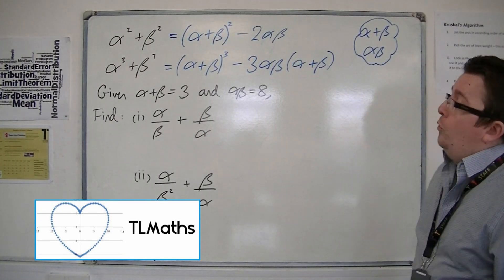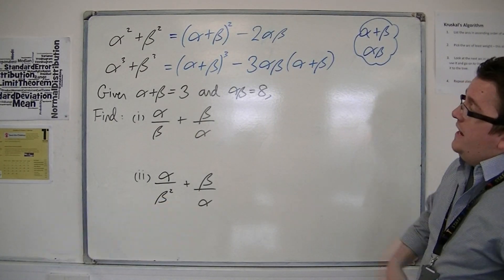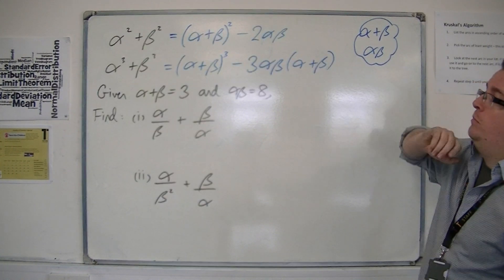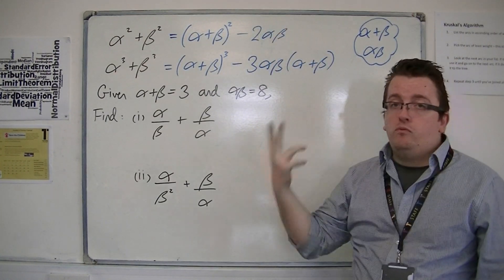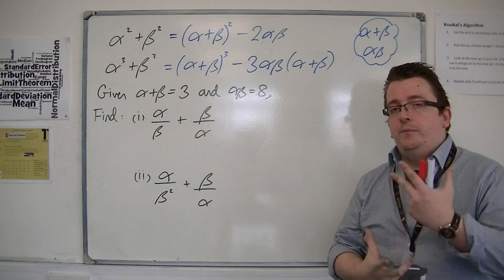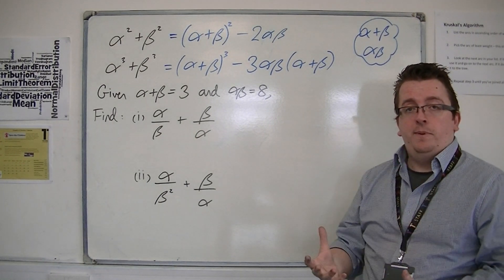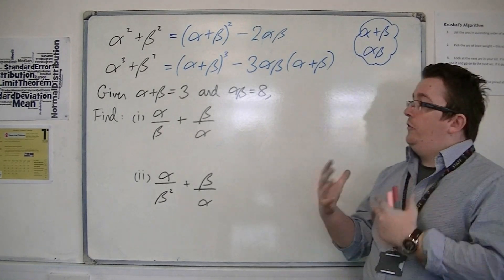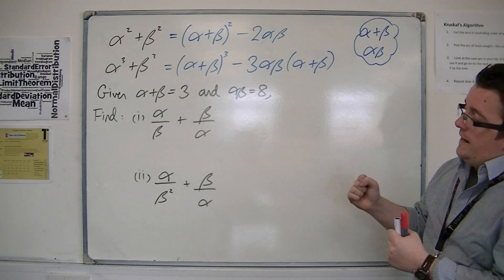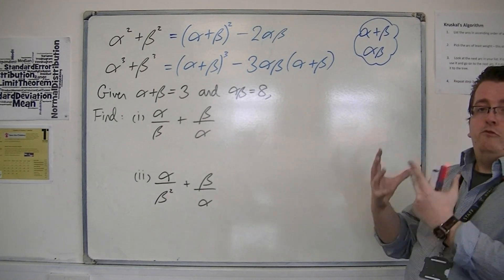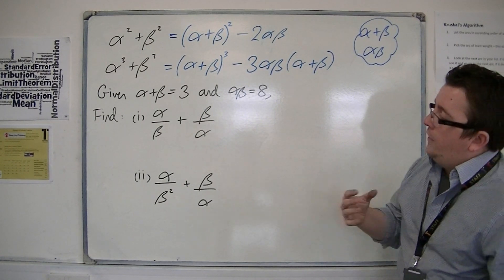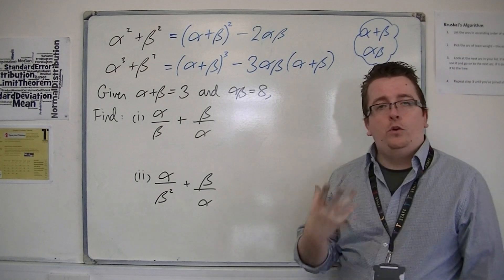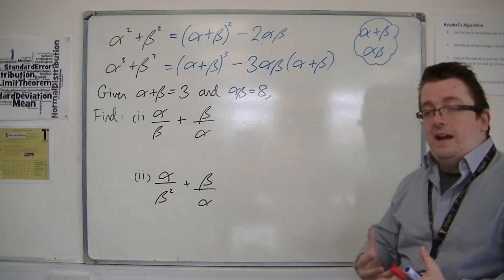In the previous video, we came to the conclusion of these: alpha squared plus beta squared, and alpha cubed plus beta cubed. We now have expressions for these in terms of alpha plus beta and alpha beta. So if I have alpha plus beta is 3 and alpha beta is 8, and I need to find these two expressions, I should now have all the tools to do this.